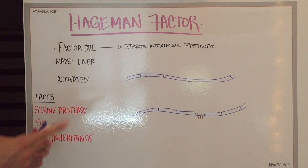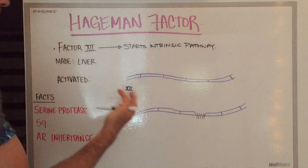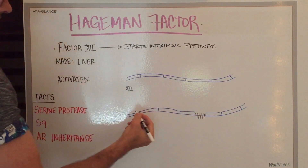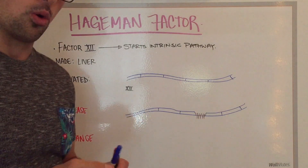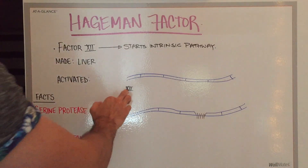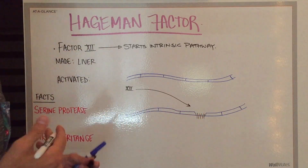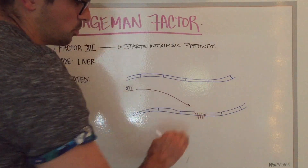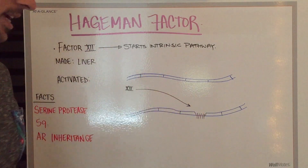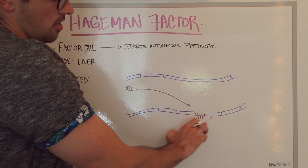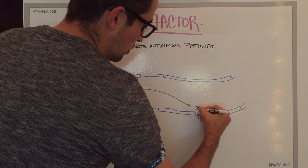Factor 12 is made in the liver and is transported throughout the blood in an inactivated form, searching for subendothelial or tissue collagen. When factor 12 comes in contact with subendothelial tissue collagen, it indicates that one of the endothelial cells broke, because there is normally no collagen on the surface of the vessel. But when there's a rupture or a break, collagen becomes exposed, and when collagen is exposed to factor 12, factor 12 becomes activated.